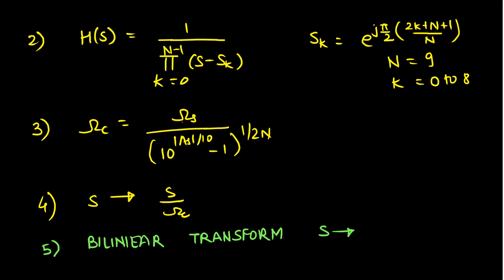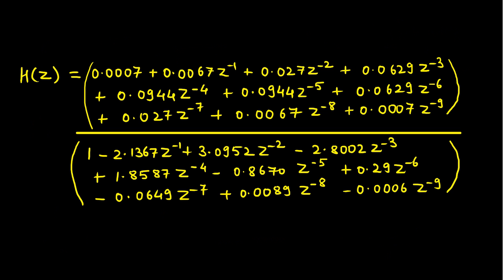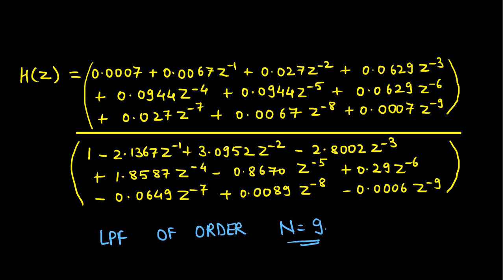Finally, we apply the bilinear transform, substituting S as (1 - Z⁻¹) / (1 + Z⁻¹). After performing all these steps, we obtain a transfer function where both the numerator and denominator polynomials are of degree N. This is a digital IIR low pass filter of order N equal to 9.